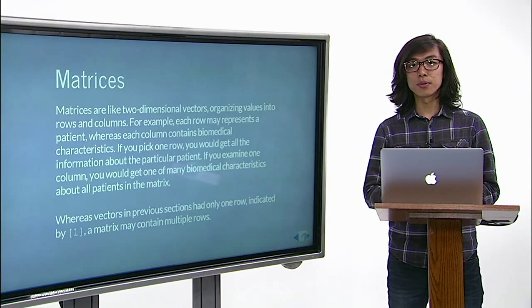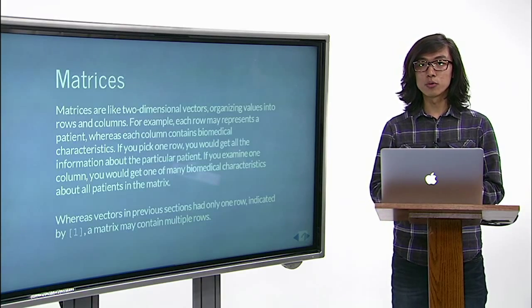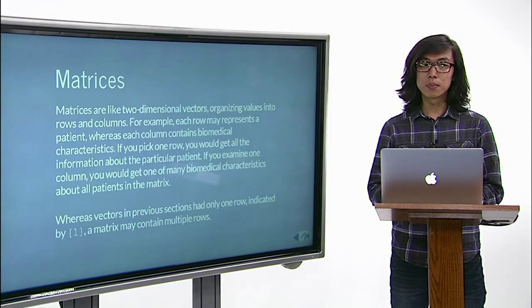Whereas vectors in previous sections had only one row, a matrix may contain multiple rows.